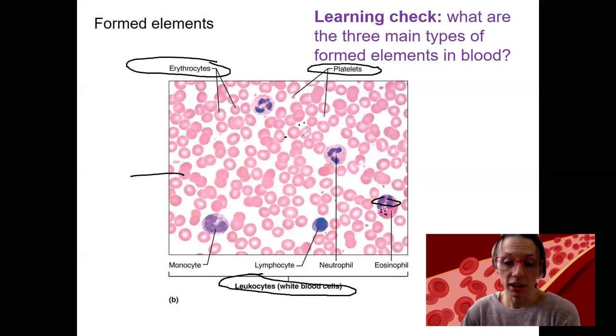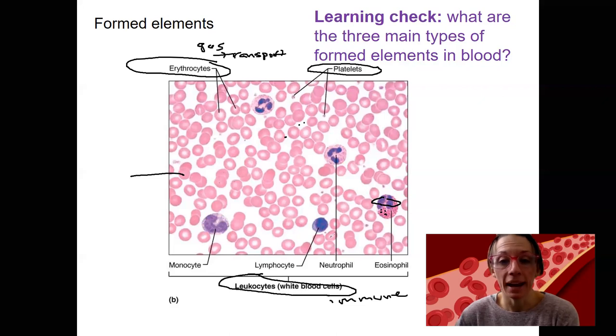And then this relates to the function of each. I've already briefly talked about the function of each of these. Gas transport, which is oxygen and carbon dioxide. Immune function for leukocytes. They are going to have products in them to allow them to take in, break down foreign material and nuclei that allow them to produce stuff as needed, live longer, learn what things are foreign and what things are not foreign. And platelets are going to be involved in blood clotting. We'll come back to that.